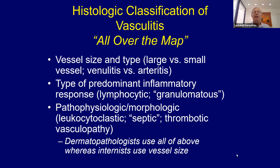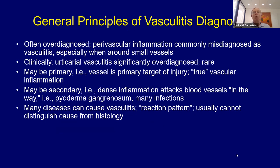Internists generally tend to use vessel size more than anything else. One thing to realize: vasculitis is often overdiagnosed because people without good criteria, when there's any inflammation around blood vessels, just call it vasculitis. For example, capillaritis — that's not really vasculitis. Urticarial vasculitis is also way overdiagnosed, especially by clinicians, internists, and allergists.